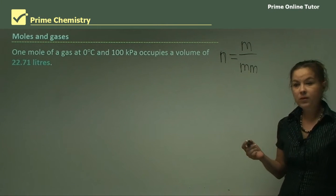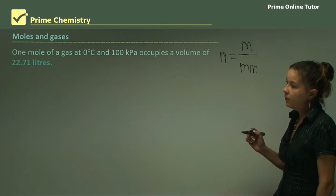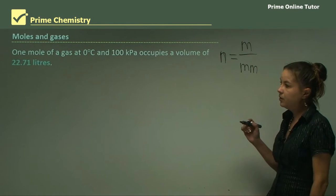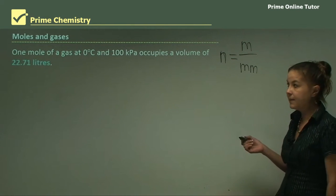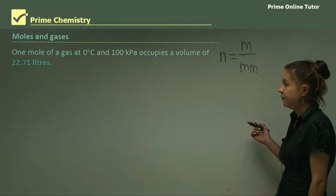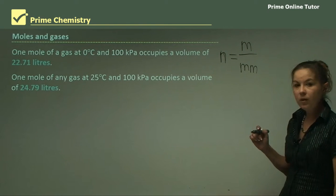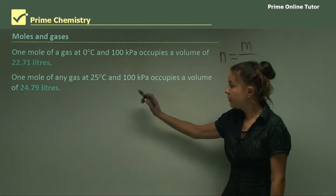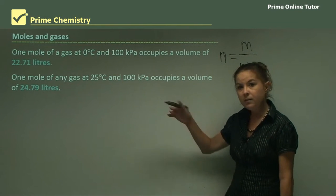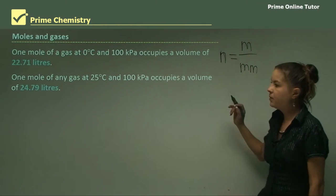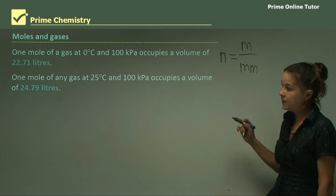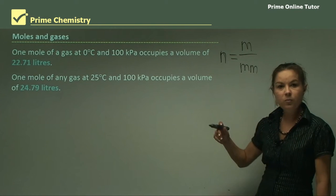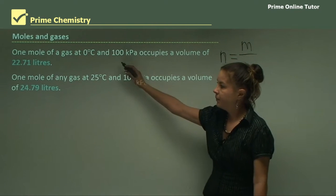So now looking at moles and gases. One mole of a gas at 0 degrees and 100 kPa occupies a volume of 22.71 liters. Now these are constants. And one mole of any gas at 25 degrees Celsius, we've got the same atmospheric pressure, or thereabouts, occupies a volume of 24.79 liters. So as you can see, at a higher temperature, the gas will occupy a greater volume.